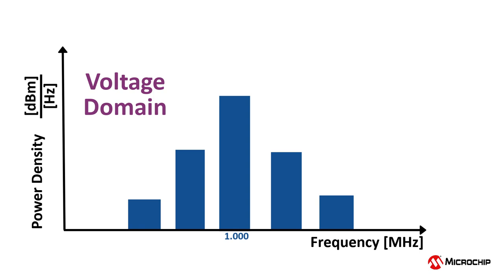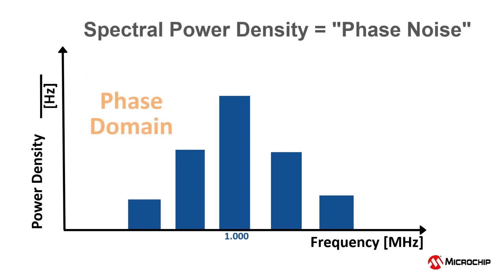In the phase domain, the spectral power density of a clock is more commonly referred to as a phase noise plot. Instead of using dBm, phase noise is described in terms of dBc per hertz, where the C in dBc represents the word carrier.